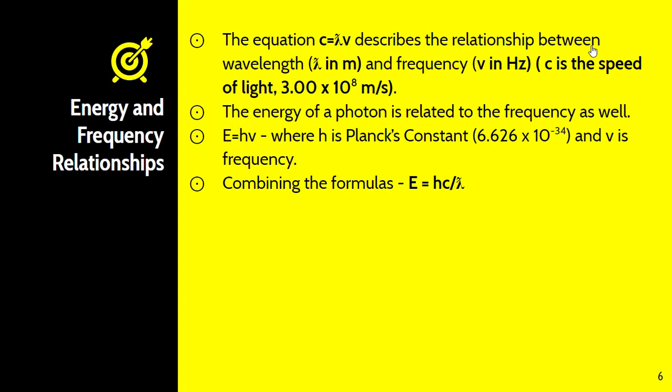We need to be able to understand the relationships between wavelength, energy, and frequency. The equation c = λv describes the relationship between wavelength lambda, which is in meters (be careful because you'll probably get this in nanometers), and frequency, which is in hertz. c is the speed of light, 3×10^8 meters per second. The energy of that photon is related to the frequency as well: E = hv, where h is Planck's constant, 6.626×10^-34, and v is frequency. You can combine these formulas to get the energy from the wavelength: E = hc/λ. Let's look at a practice problem.